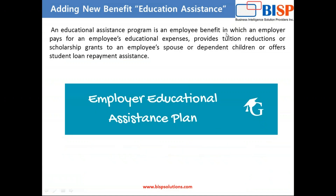Education assistance program is an employee benefit in which an employer pays for an employee's education expenses. It provides tuition reduction, a scholarship grant, or coverage for an employee's spouse or dependent. Basically the employer pays some part or the complete tuition fees to the employee, and this is the benefit I need to add into my workforce planning.